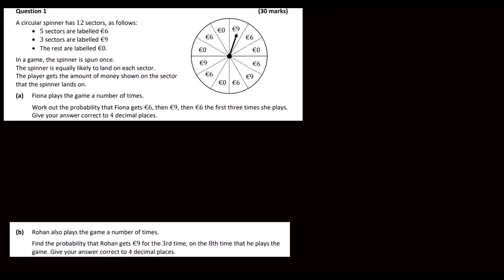The spinner is equally likely to land on each sector. The player gets the amount of money shown on the sector that the spinner lands on. Fiona plays the game a number of times. Work out the probability that Fiona gets 6 euros, then 9, then 6 the first three times that she plays. Give your answer correct to four decimal places.